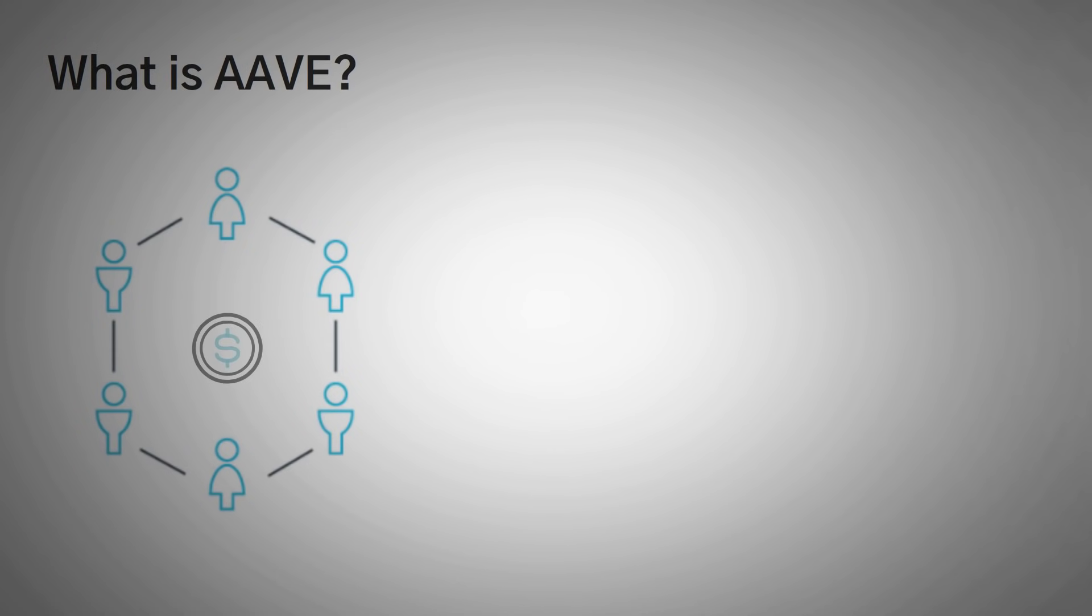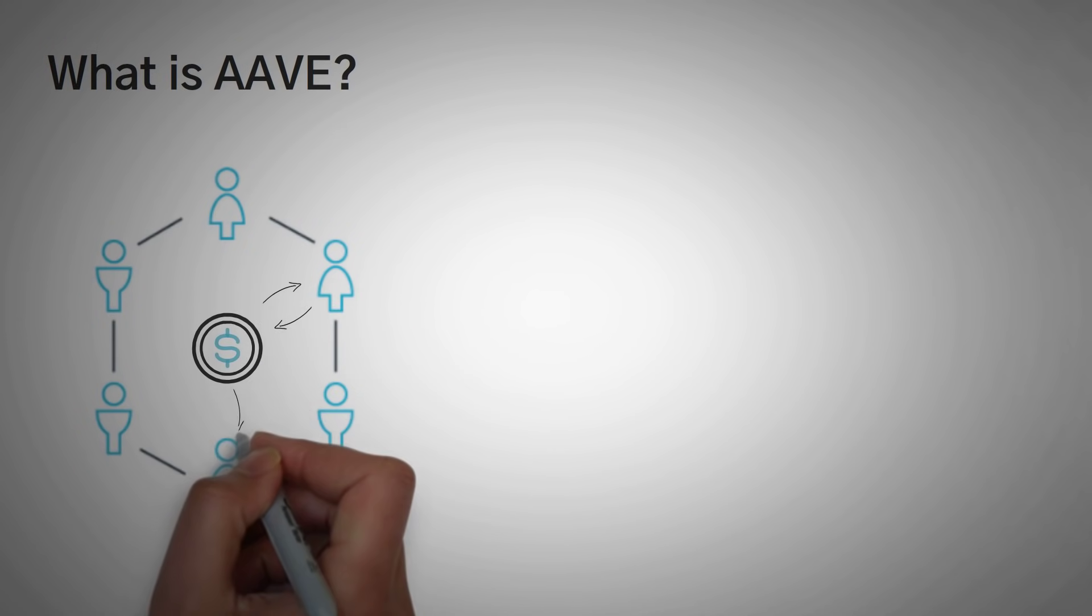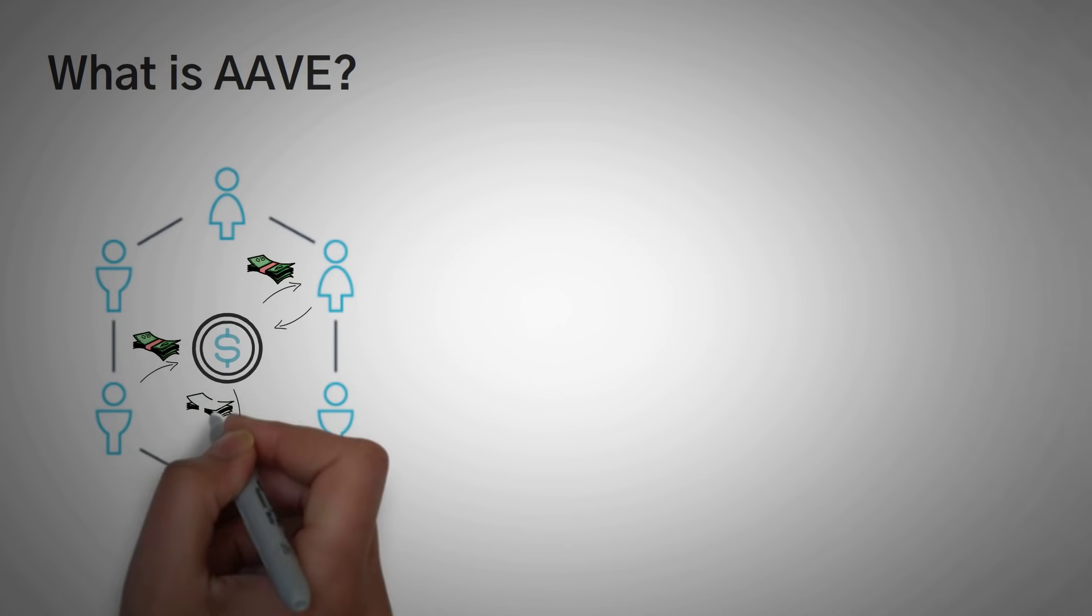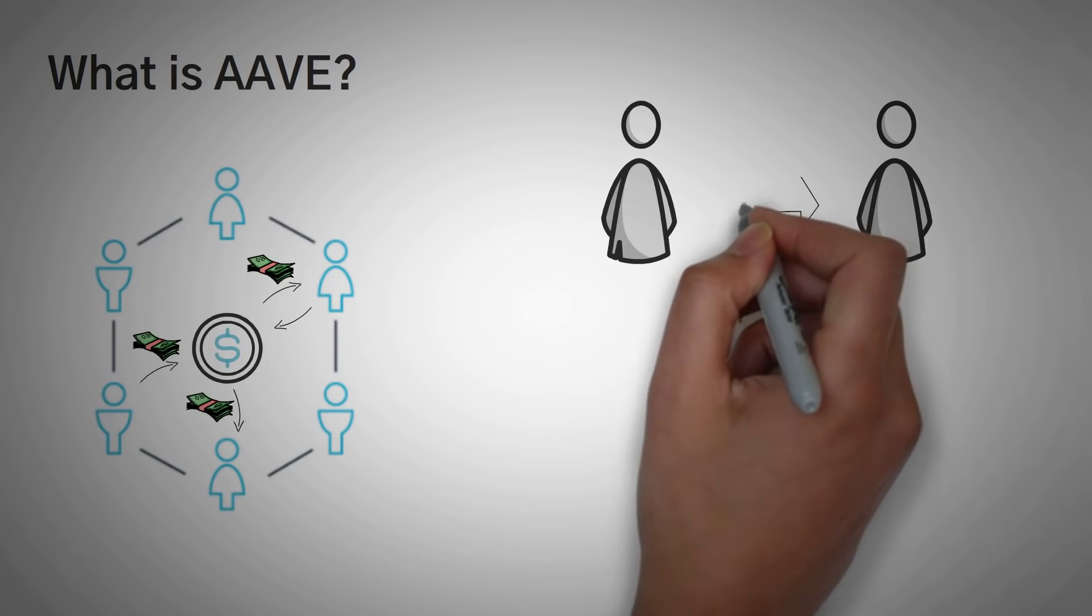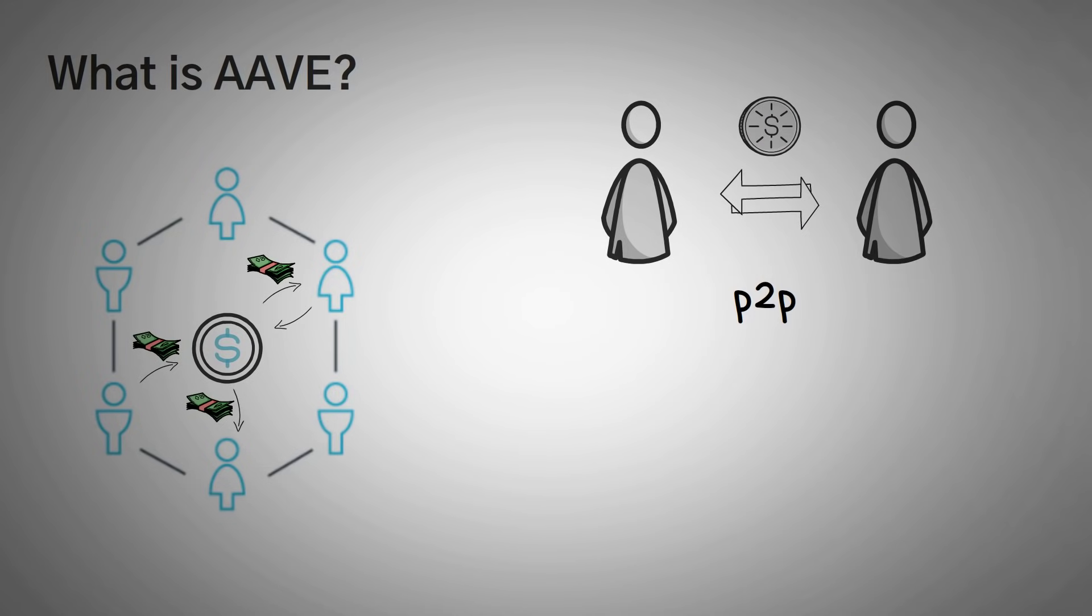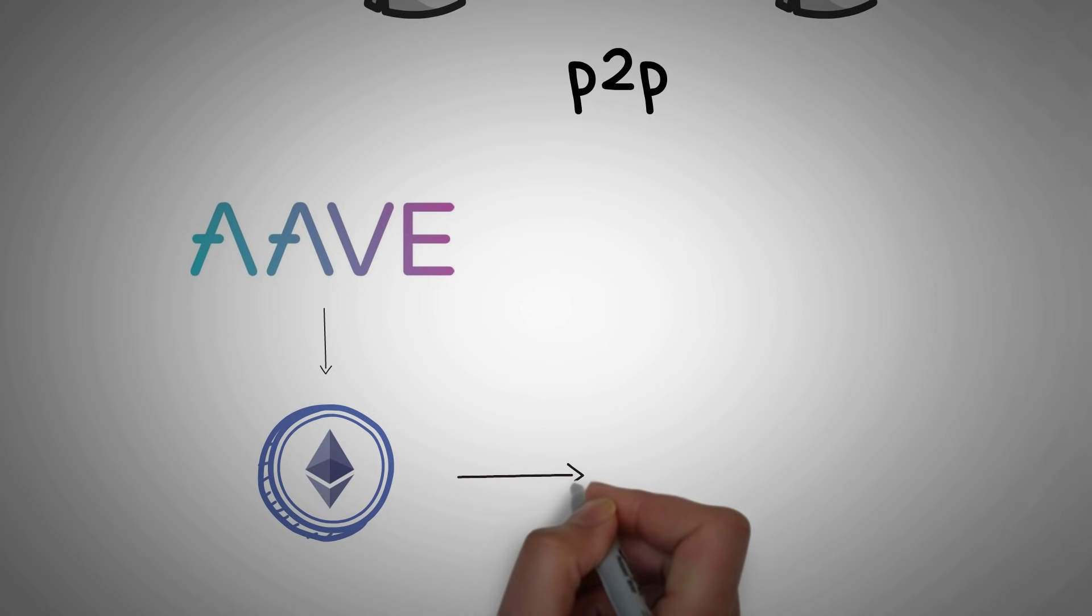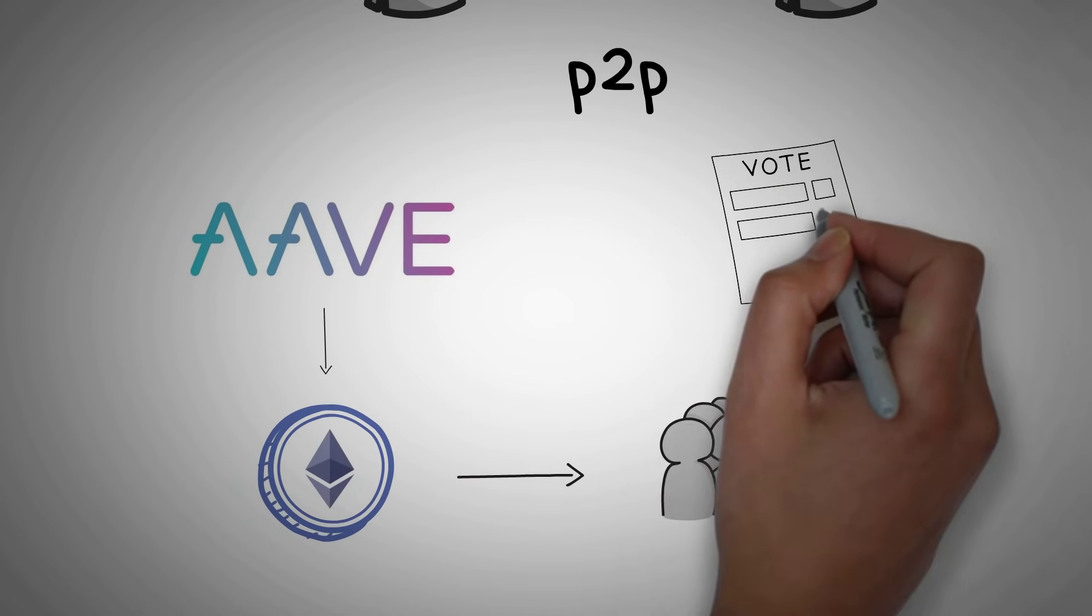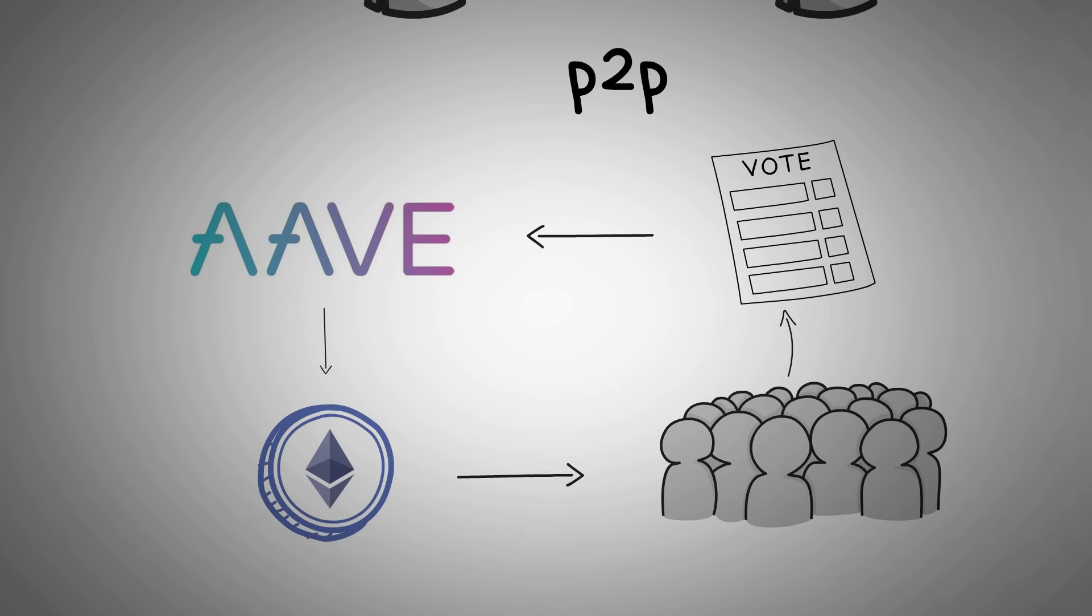Aave is a decentralized finance application that allows people to lend and borrow cryptocurrencies, in turn, for getting and paying fees. Aave is basically peer-to-peer lending using cryptocurrencies as the asset that is traded. However, Aave uses an algorithm to determine lending rates and to match the lenders to borrowers. Aave also has an associated Aave token, which is an Ethereum token that powers the governance on their platform. In short, the idea of this token is that token holders get to vote on changes to the application as time goes on.